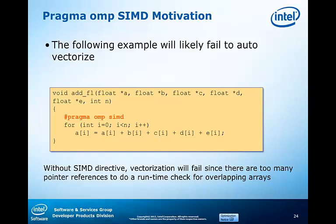But with the SIMD pragma, the developer is asserting to the compiler that we know the usage model of these arrays and that we can assert that the arrays A, B, C, D, and E are all independent. Later on, we will look at modifier clauses that can be added to the pragma OMP SIMD to explicitly control vector characteristics of loops and data usage.